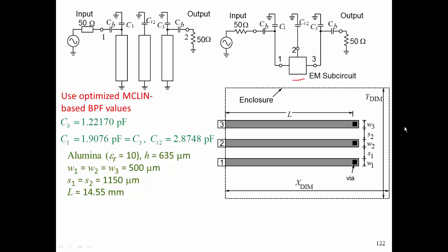For the EM sub-circuit, we need to lay out our microstrip lines in an enclosure, and that whole enclosure, which is a three-dimensional box, becomes our electromagnetic environment. Here is the layout of our circuit with the correct width, spacing, and length of our lines.